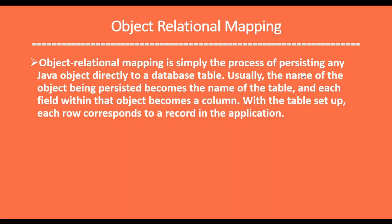So what is Object Relational Mapping? Object Relational Mapping is simply a process of persisting any Java object directly into a database table. The name of the object being persisted becomes the name of the table, and each field within that object becomes a column. So basically ORM is a kind of programming technique that provides a direct mapping between a Java domain object and a relational database table.